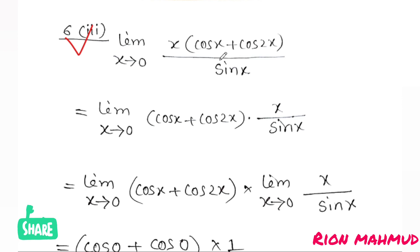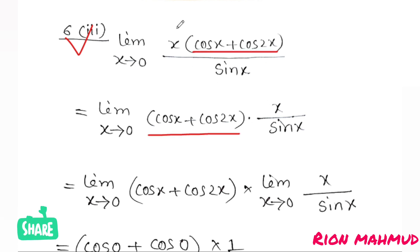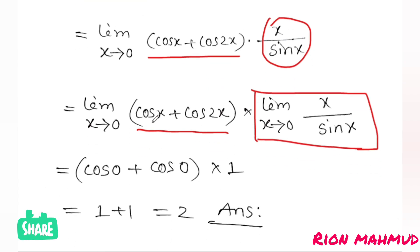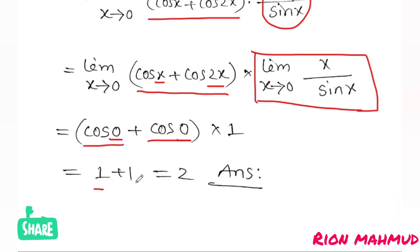Third question: limit x tends to 0 of x·cosx plus 2sinx divided by sinx. We separate this: limit of x·cosx/sinx plus limit of 2sinx/sinx. That gives limit of x/sinx times cosx plus 2. As x tends to 0, x/sinx tends to 1 and cosx tends to 1. So answer is 1×1 plus 2 equals 0 minus 1 plus 1 plus 1 equals 2.